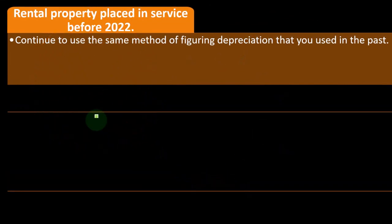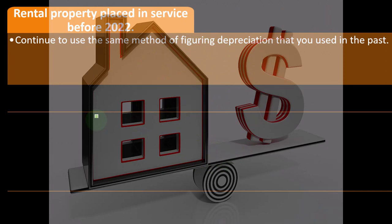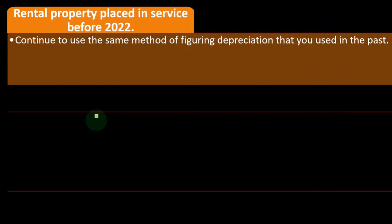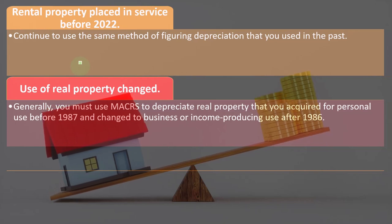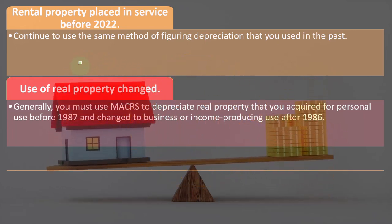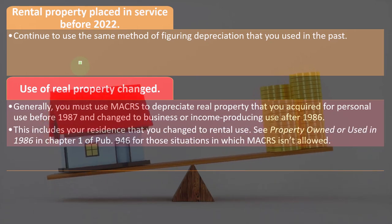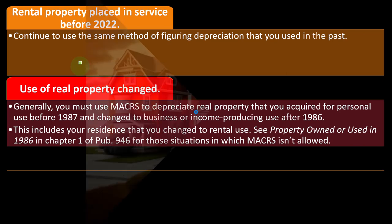For rental property placed in service before 2022, continue to use the same method of depreciation you used in the past — a consistency principle that makes sense. Regarding use of real property changed: generally you must use MACRS to depreciate real property that you acquired for personal use before 1987 and changed to business or income-producing use after 1986. This includes your residence that you changed to rental use.